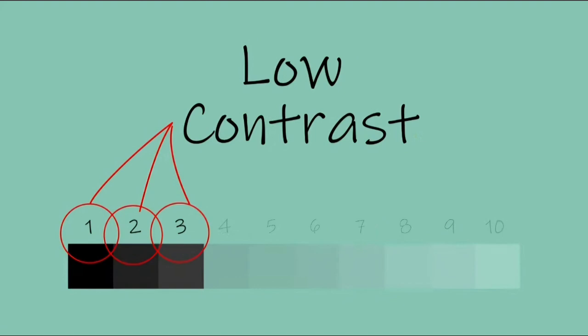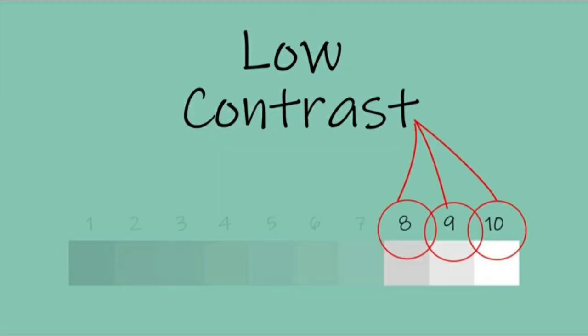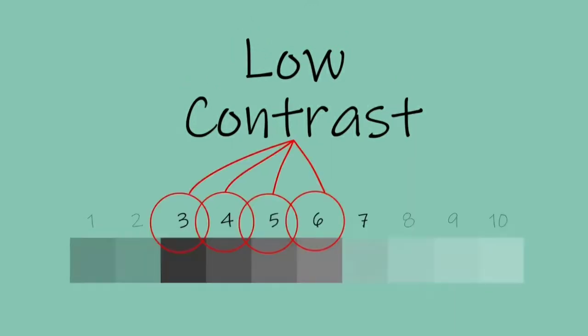When we do this, it is called low contrast. Low contrast means we're only using a certain section of the value scale — it could be the lower scale, the higher scale, or the middle scale.